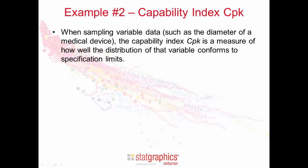CPK arises when we're sampling variable data, such as the diameter of a medical device, and we want to know how well the distribution of that variable conforms to specification limits.